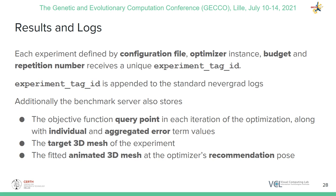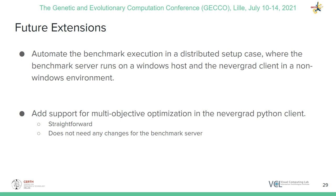After each experiment, the Benchmark Server records the query pose and the individual and aggregated error term values at each iteration. It also dumps the target 3D mesh of the experiment, along with the fitted animated template output at the optimizer's recommendation pose. Currently, the benchmark execution is automated for the case where both the NeverGrad Python Client and the Benchmark Server are co-located. In the future, we may automate the benchmark execution in distributed environments. Finally, on the Python side, we may extend the API to support multi-objective optimization.